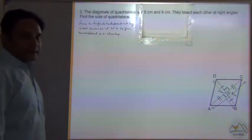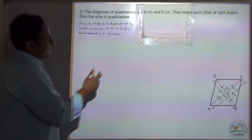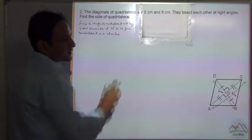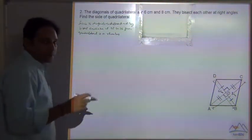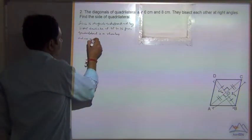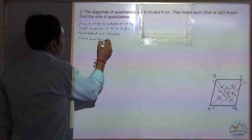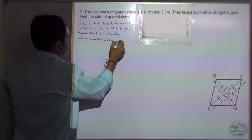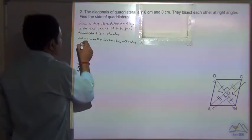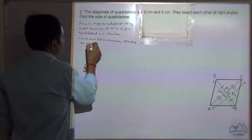We know that in a rhombus all the sides are equal, and the other two properties are already given - that the diagonals bisect each other at right angle. These are the main important things.